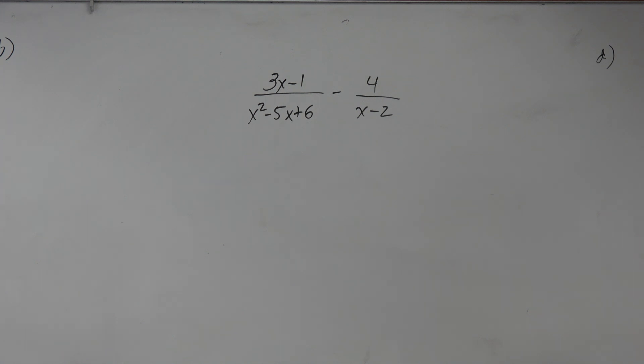Alright, so let's take a look here. We have 3x minus 1 divided by x squared minus 5x plus 6 minus 4 times x minus 2.